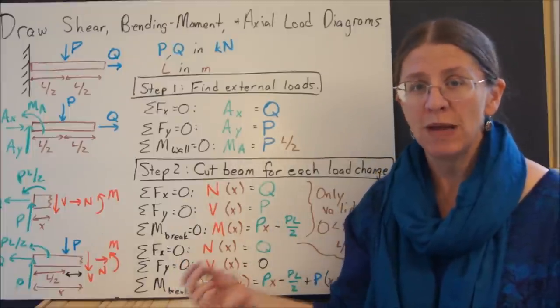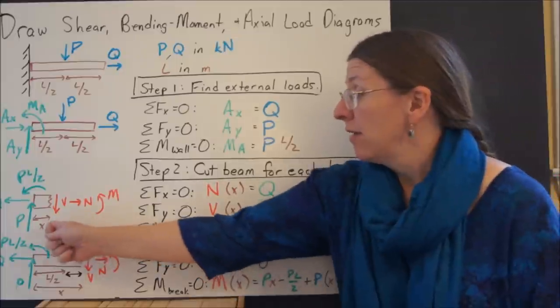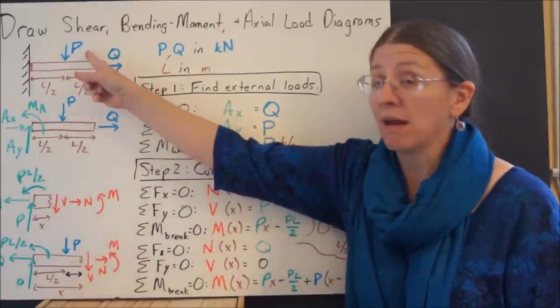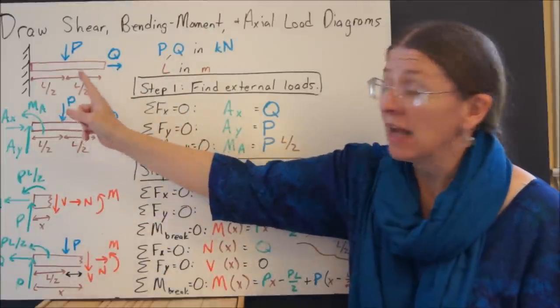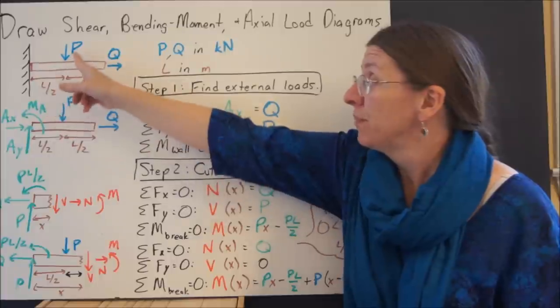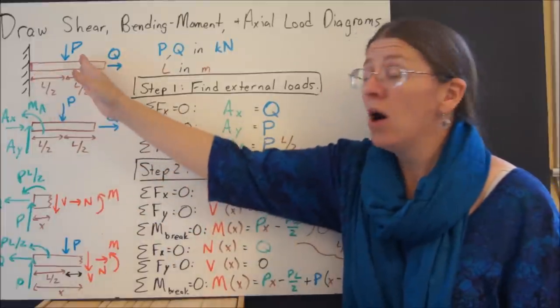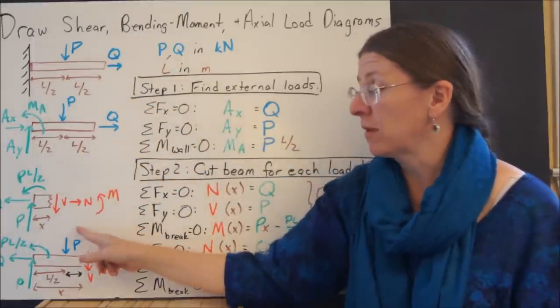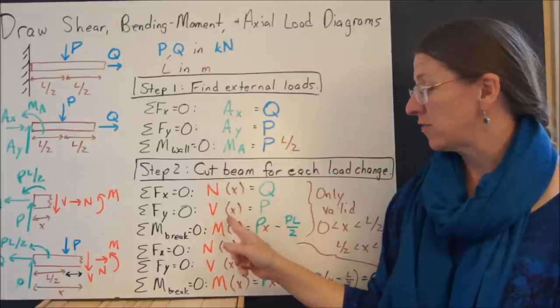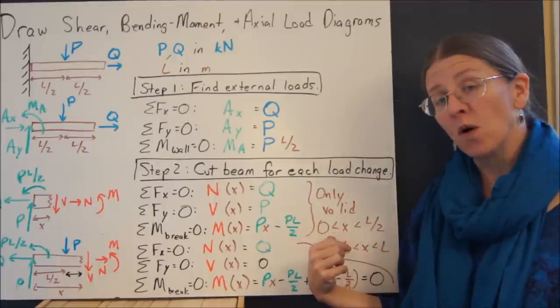I want to draw the free body diagram for every single position along the beam. Clearly, I do not want to draw infinitely many free body diagrams, but I don't really need to because of algebra. This is the free body diagram for any x as long as I haven't gotten to this P yet. So any slice I take between the wall and the mid P gives me this free body diagram.